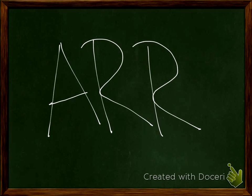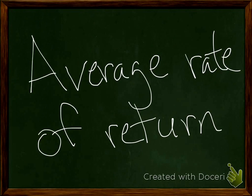Now we're going to learn how to calculate ARR. ARR is the average rate of return. We're looking at over the life of the investment: what's our return, how much money do we make, what's the average — so how much per year — and we'll find that in a percentage form.